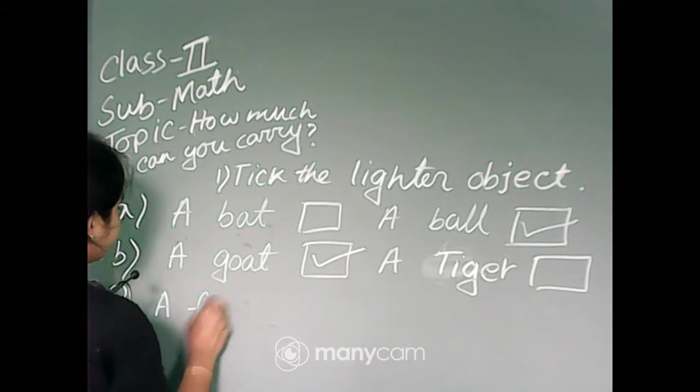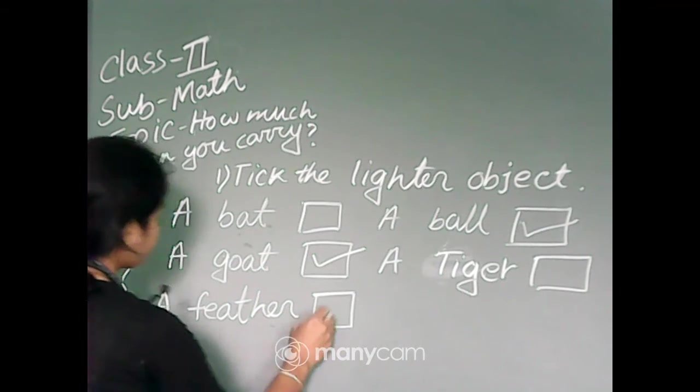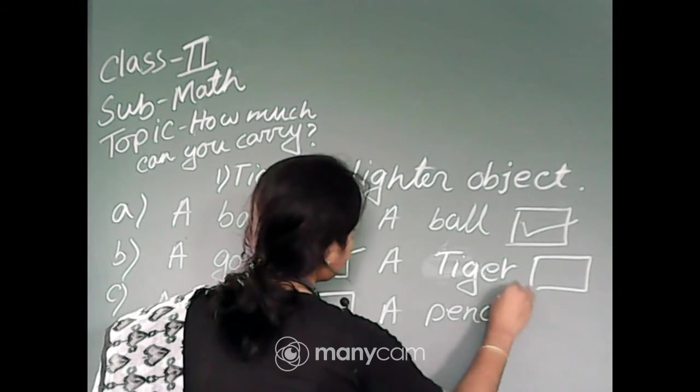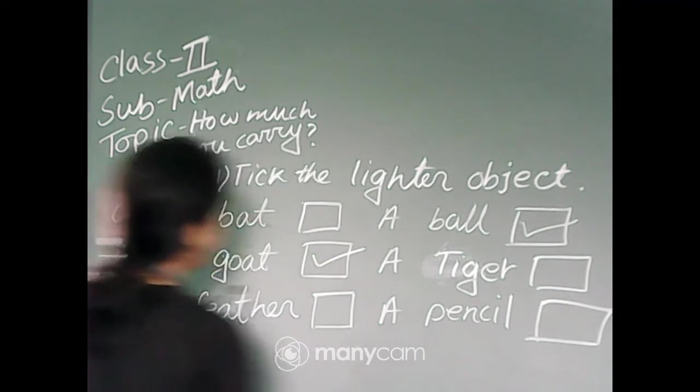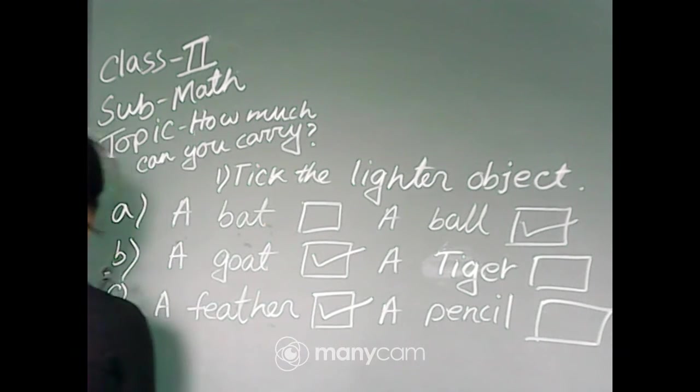Next, number C: a feather or a pencil. Which is lighter? Feather or pencil? Feather. Tick feather.